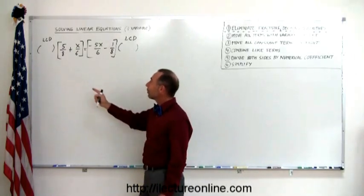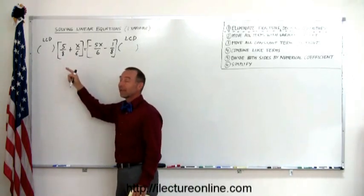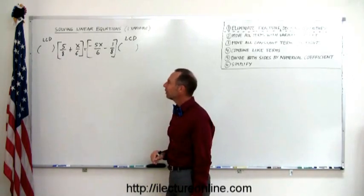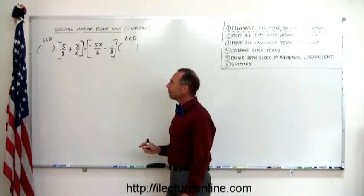But typically, it could be the product of the two. So if I multiply 6 times 8, that's 48. That's a common denominator, but not the lowest one.